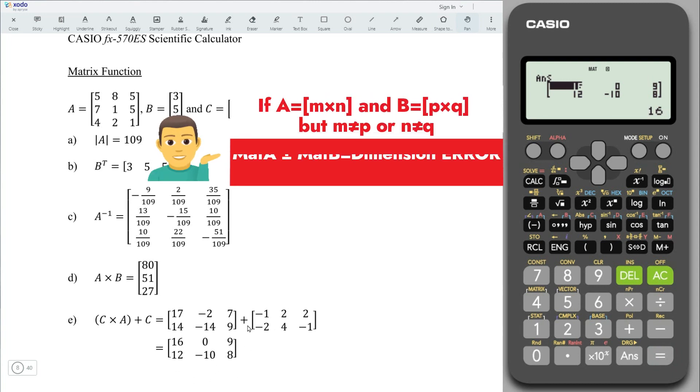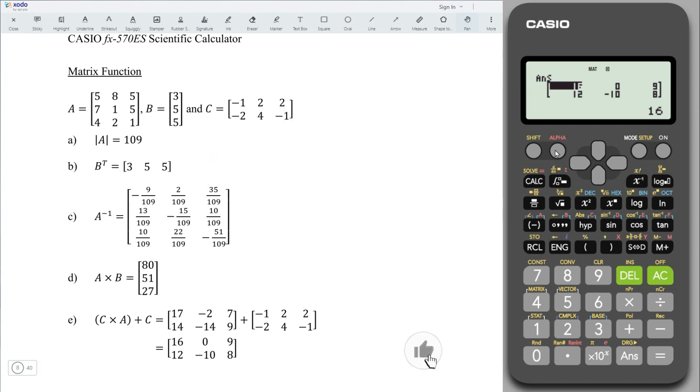Note that, either for addition or subtraction, the involved matrices must be of the same dimensions. Otherwise, we would obtain dimension error. For example, if we take matrix B minus the matrix C. When we press on equal, dimension error is obtained.